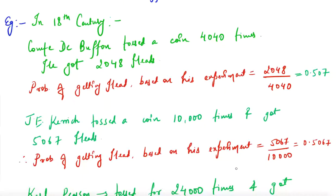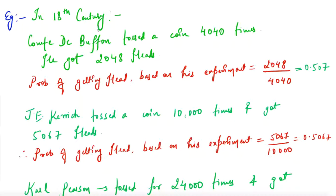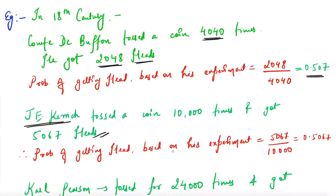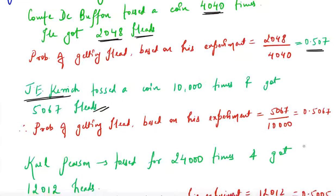Let me take an example from your NCERT textbook. In the 18th century, Comte de Buffon tossed a coin 4040 times and got 2048 heads, giving a probability of 2048/4040 = 0.5007. Similarly, J.E. Kerrich tossed a coin 10,000 times and got 5067 heads, giving a probability of 5067/10000 = 0.5067.